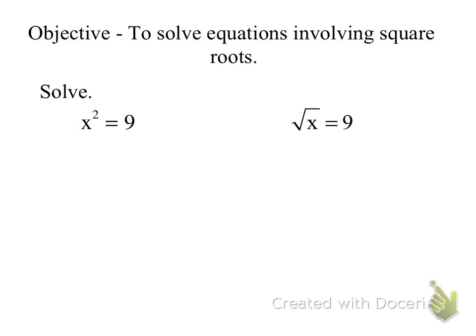How many possible solutions do we have to x² = 9? We have two possible solutions. What are the two solutions? 3 and negative 3 will make this a true statement.